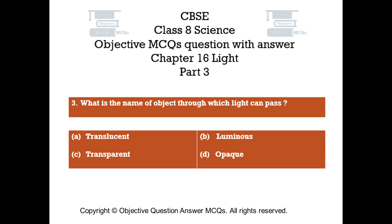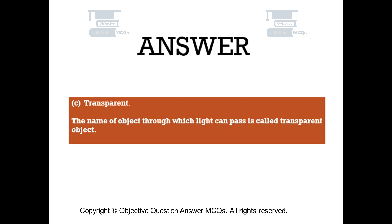Question number 3: What is the name of object through which light can pass? Option A: Translucent, Option B: Luminous, Option C: Transparent, Option D: Opaque. The right answer is Option C: Transparent. The name of object through which light can pass is called Transparent Object.